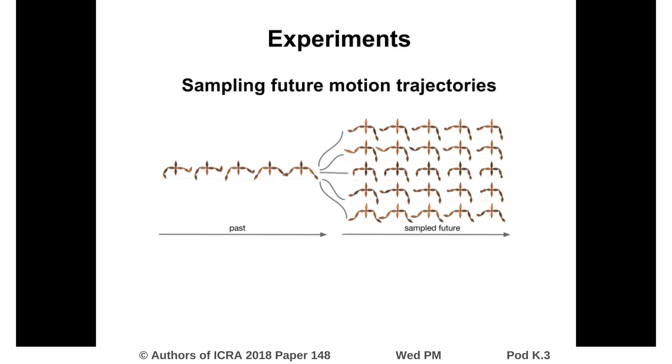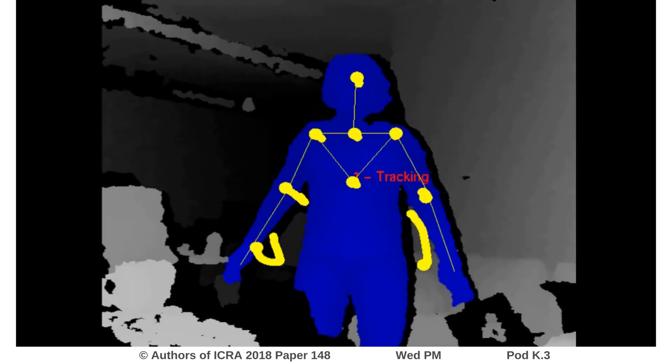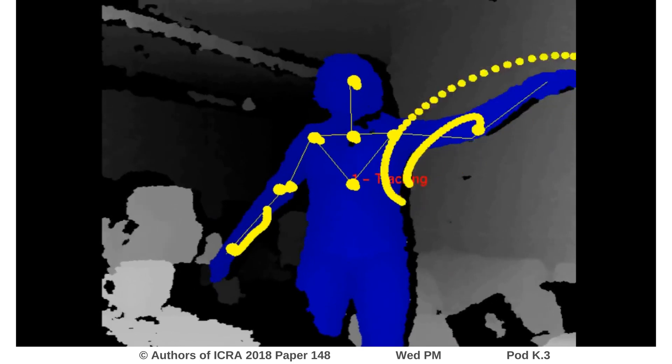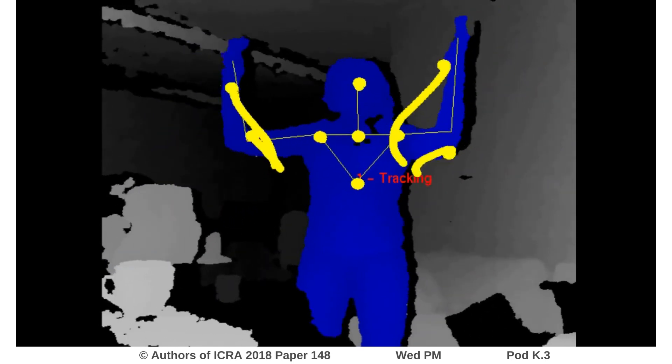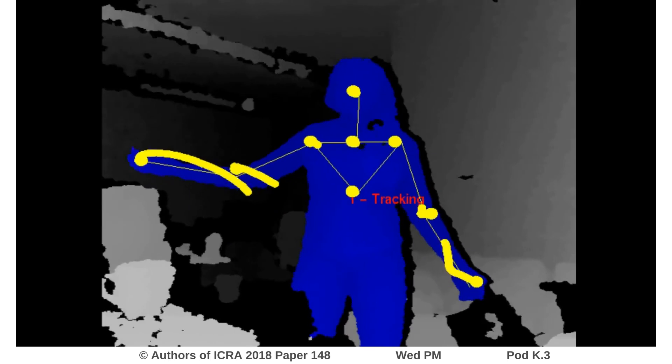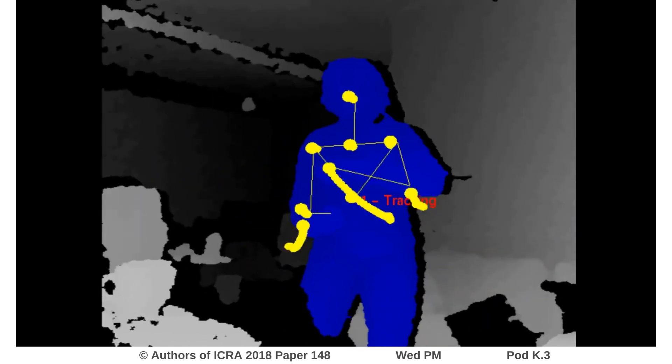Due to the latent distribution, we can sample different possible future movements, which are in line with the observed past trajectories. Here you see online samples. At each time step, we predict the future trajectory of each joint for the next 1660 milliseconds.